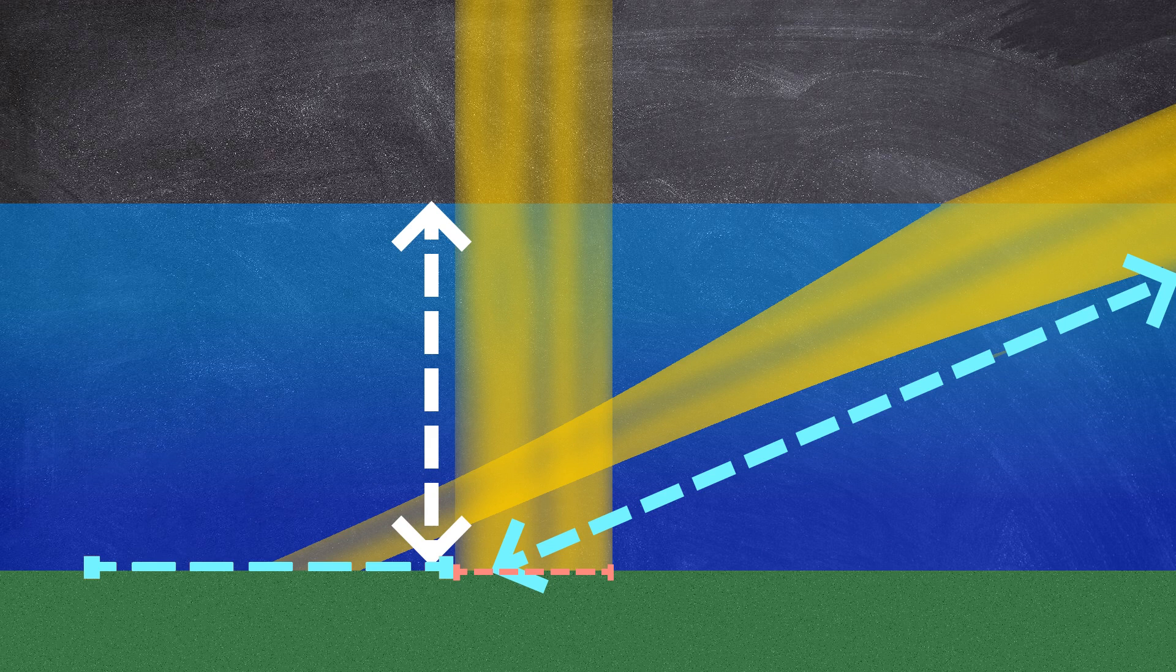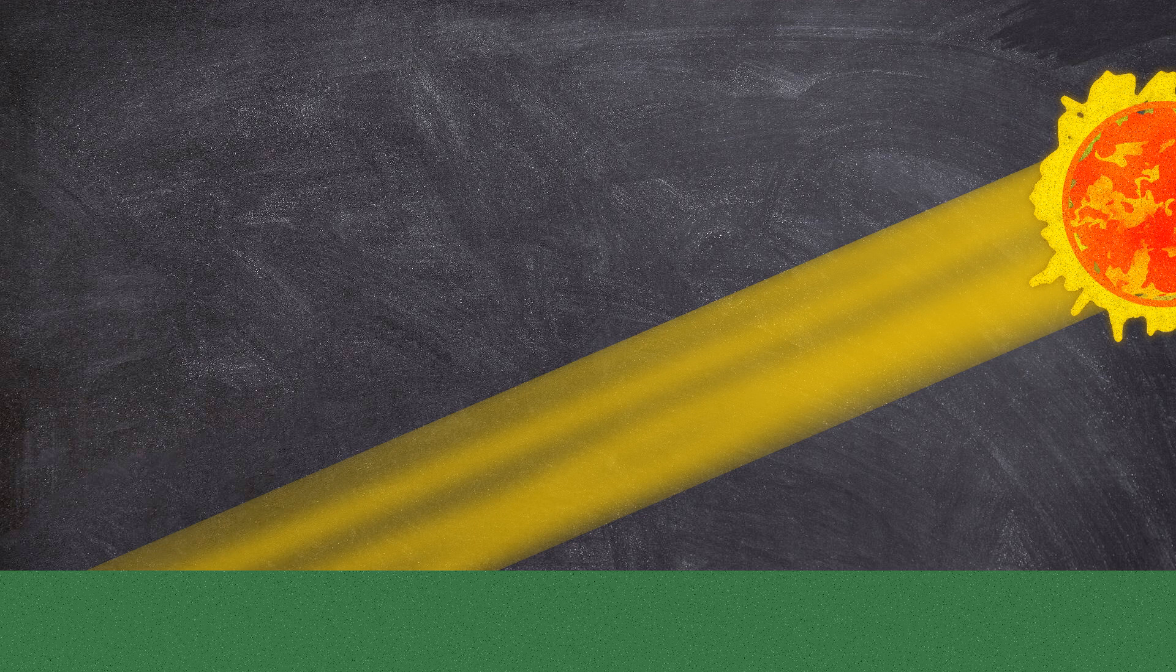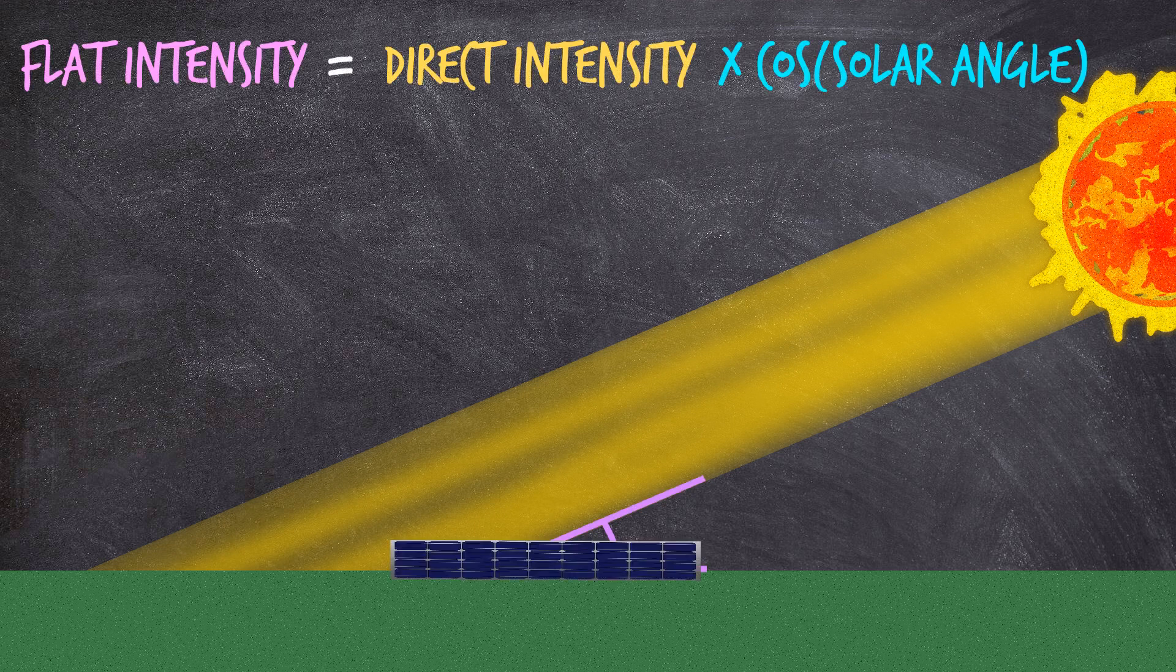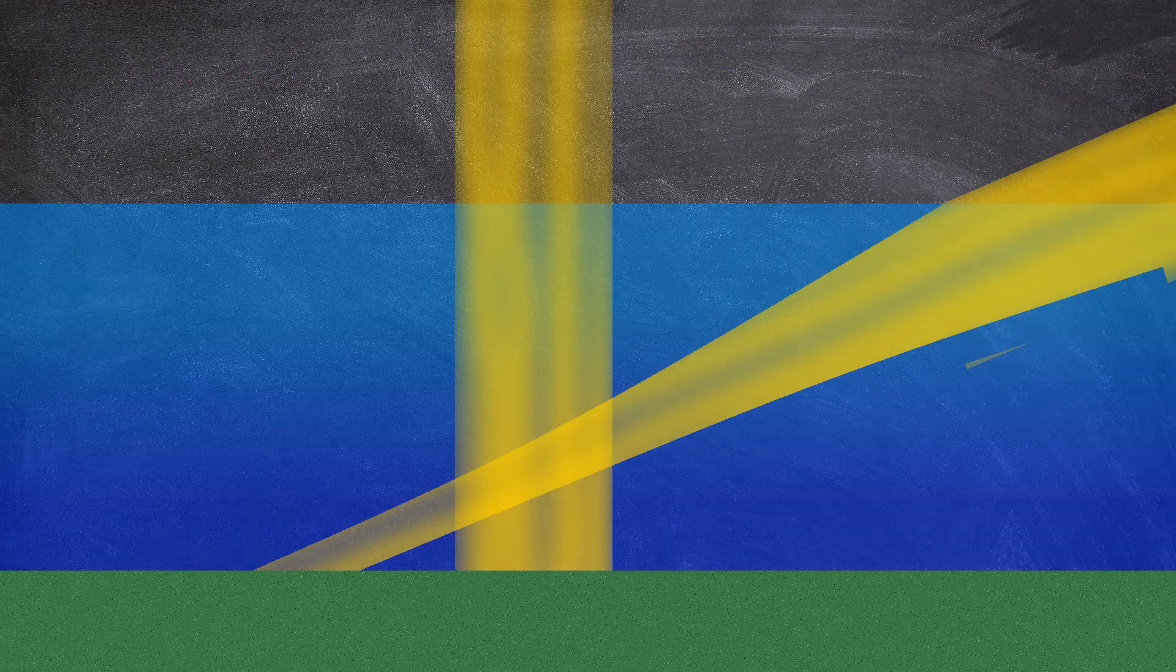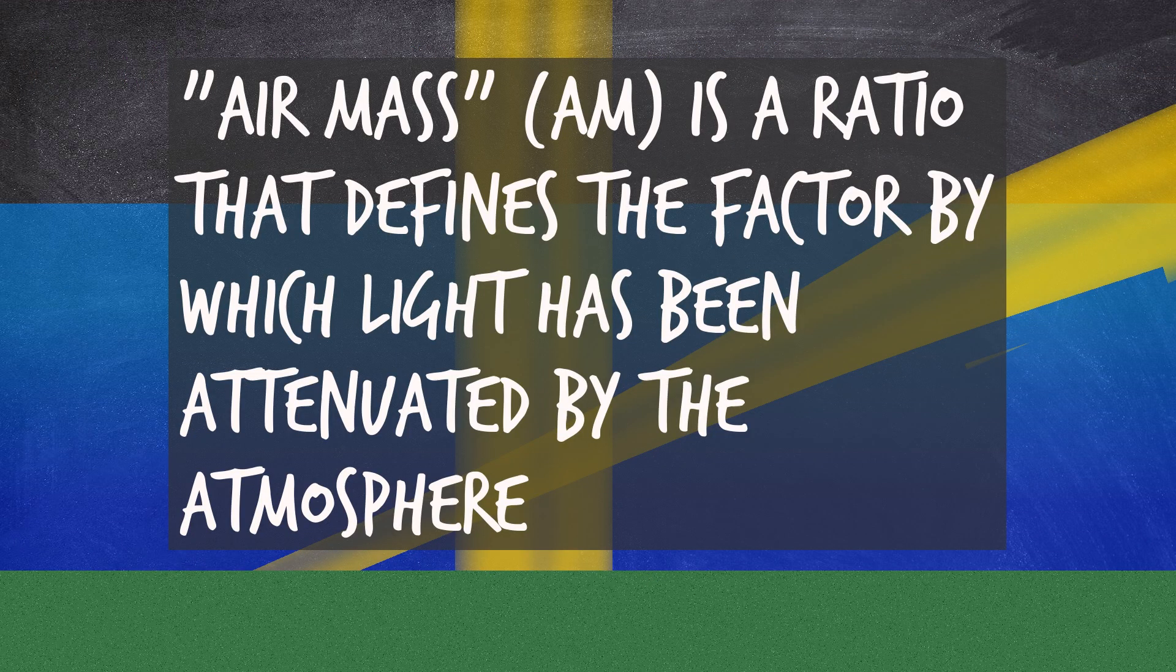And it's also worth knowing that these are two distinct effects. The first is entirely just a matter of geometry. And for example, if you have a solar panel, you can correct for it by simply tilting the panel. However, the second effect, which is sometimes called air mass, changes with altitude, with cloud cover and weather and pollution and so on.